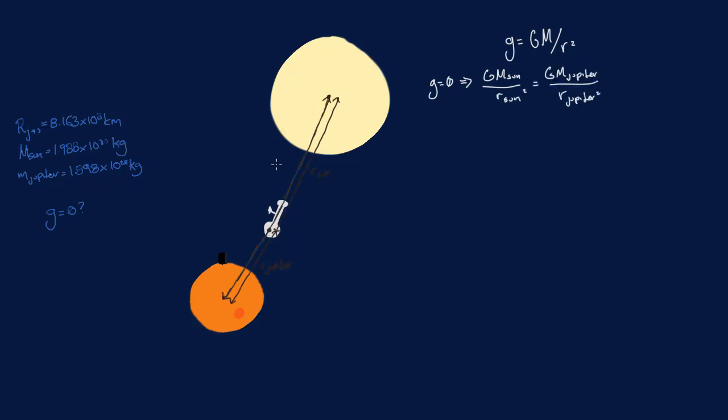Now RS and RJ are the distance from the spaceship to the Sun and to Jupiter, respectively. To find RJ, which is what the question has asked for, we can use the distance from Jupiter to the Sun to remove RS.